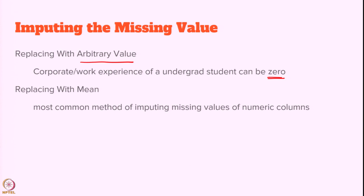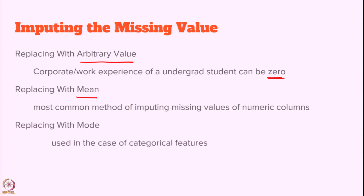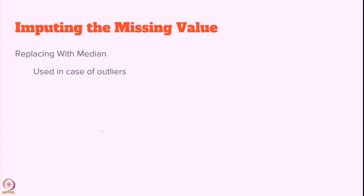If data is missing in numerical columns, we can replace the missing value with the mean. If it is a categorical feature — such as classifying dog, cat, and elephant — we can use the mode. If the data contains outliers and you have not resolved them, you can use the median to fill the missing data.